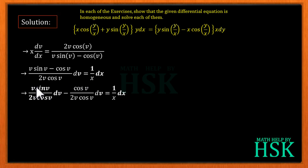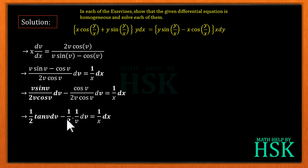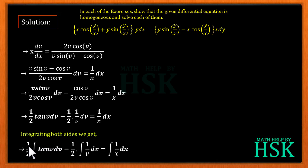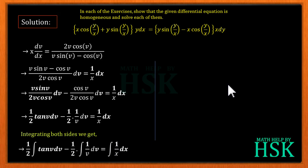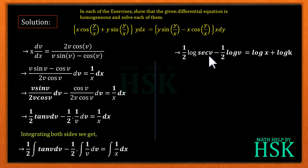After cancellation — v/v cancels and cos(v)/cos(v) cancels — we get (1/2)·tan(v) dv − (1/2)·(1/v) dv = (1/x) dx. Integrating both sides: (1/2)·∫tan(v) dv − (1/2)·∫(1/v) dv = ∫(1/x) dx. The integral of tan(v) is log|sec(v)|, so we obtain (1/2)·log|sec(v)|.